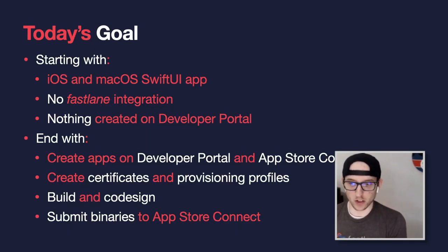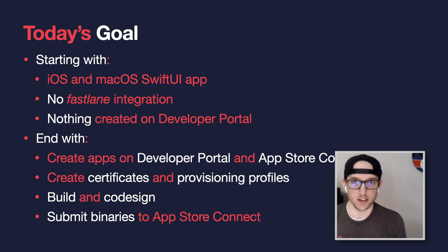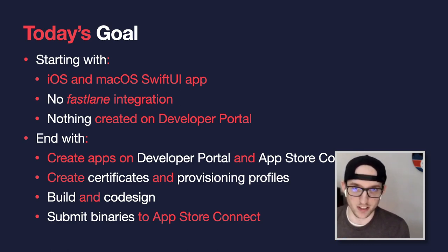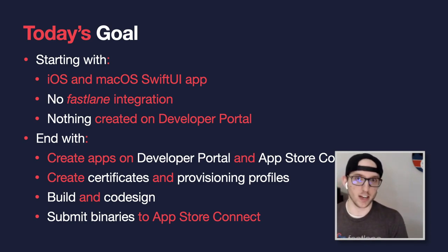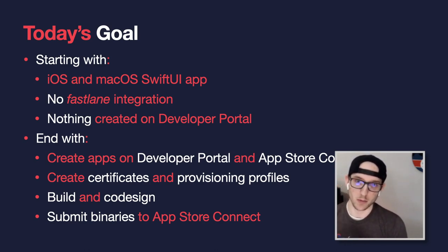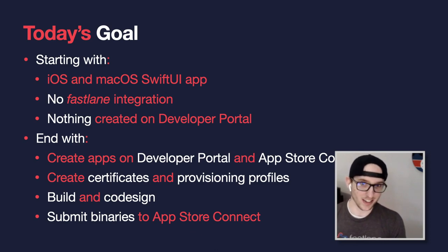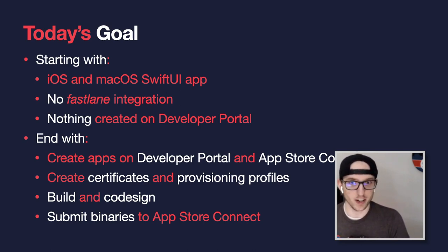Today's goal: we're going to start off with a Swift UI app that has an iOS and macOS build target. It's pretty simple — just a single label on the screen that says 'Hello World.' Nothing too complex because we're not going to get into any Swift code. There's no Fastlane integration, nothing created in the developer website yet. We're going to end up with created apps on the developer portal and App Store Connect, with certificates and provisioning profiles. It's going to build, code sign, and submit binaries to the App Store.